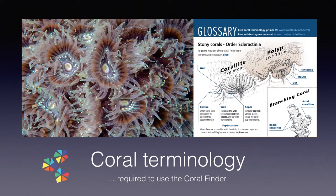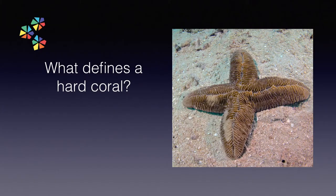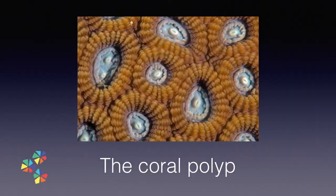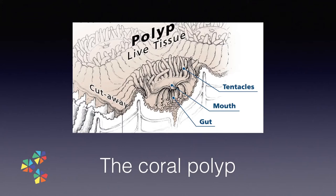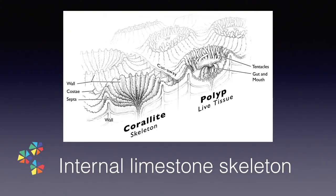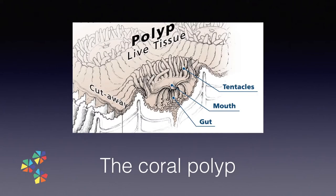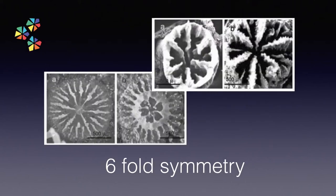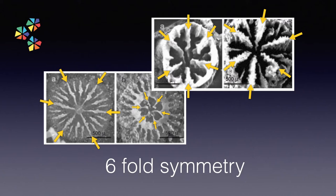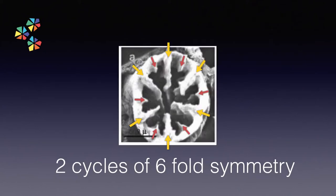Before we meet the key terms and concepts used by the Coral Finder to separate common coral genera, we first need to know what defines a hard coral. Hard corals are animals with polyps — a simple tube with a hole at one end, a mouth, surrounded by a ring of tentacles. They differ from anemones by having an internal limestone skeleton. The skeleton and the polyps that form hard corals are further distinguished by having a six-fold symmetry, most easily seen in very young corals. Look closely for the six dominant spikes in these pictures of newly settled coral skeletons, known as primary septa — the foundation elements of the coral skeleton, surrounded by younger cycles of septa in multiples of six.